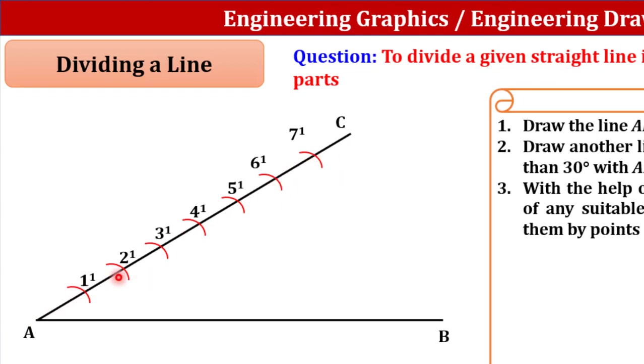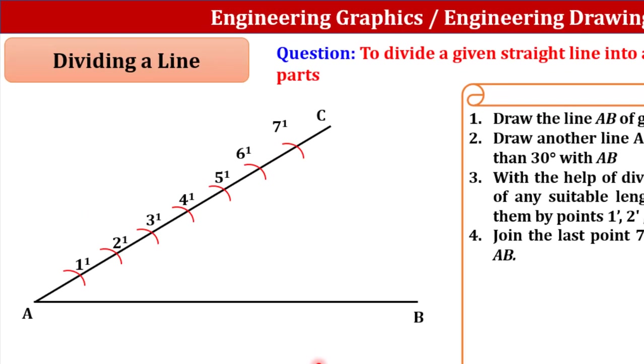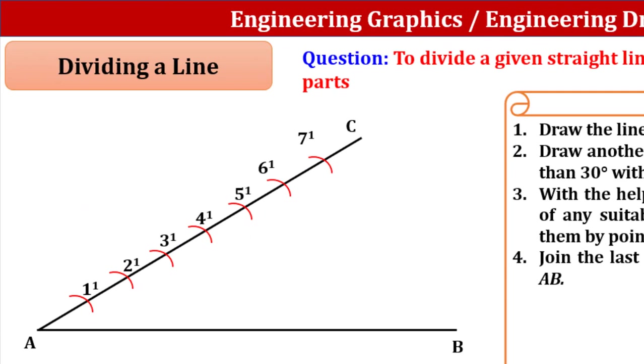Now join the last point of 7' with the point B on the line AB. Take a drafter, coincide this point with respect to this point and draw a line like this and mark that point as 7.